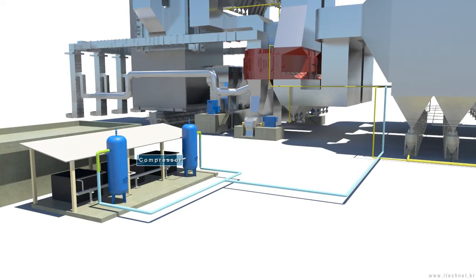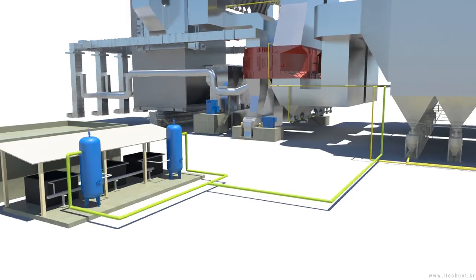The compressed air which is compressed by the compressor is sent to the ash system through pipes.